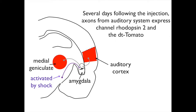Several days following the injection, axons from the auditory system express channel rhodopsin 2 and tomato. Notice the only axons expressing channel rhodopsin 2 are the axons from the auditory cortex and medial geniculate. The axons activated by shock do not express channel rhodopsin 2 because they are not transfected.